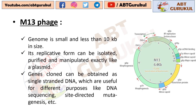Now let's see the advantages of M13 Phage or M13 Vector. Its genome is small and less than 10 Kb in size. Its replicative form can be isolated, purified and manipulated exactly like a plasmid. Genes cloned can be obtained as single stranded DNA, which are useful for different purposes like DNA sequencing, site-directed mutagenesis, etc.